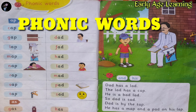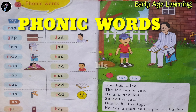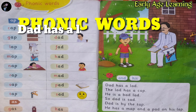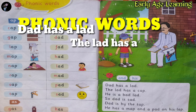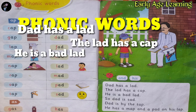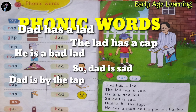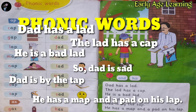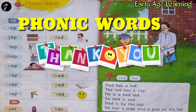Now see some examples. He is bad. He has a lad. The lad has a cap. He is a bad lad, so that is sad. He has a map and the pet is on his lap.